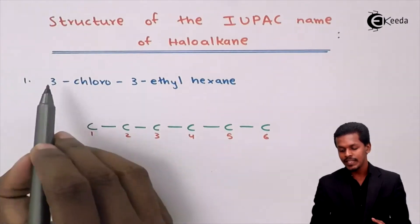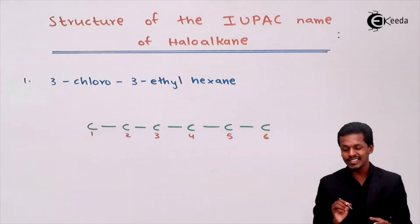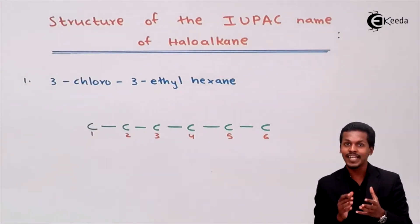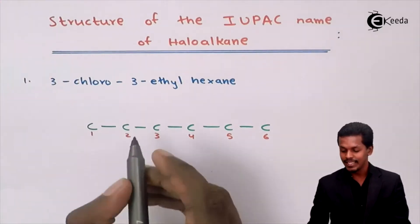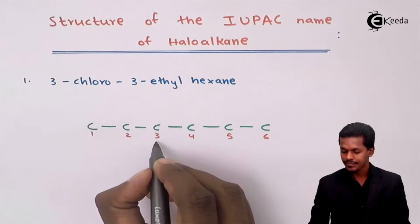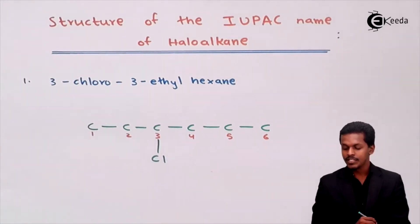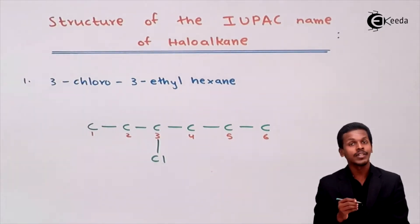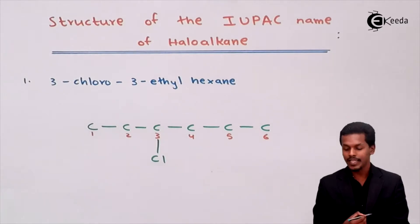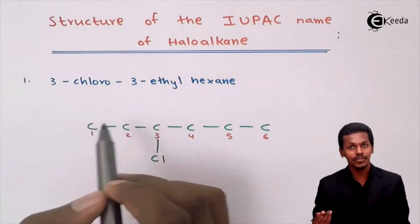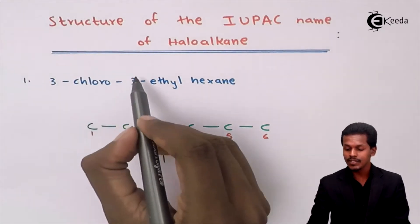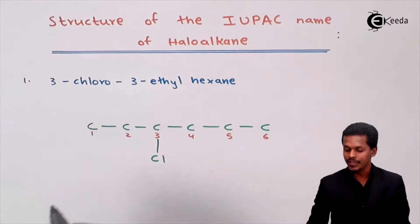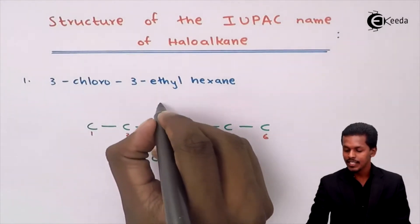It is mentioned as 3-chloro, which indicates the chlorine atom is attached to the third carbon atom. So we attach the chlorine at that position in the straight chain of hexane. The next substituent is ethyl, also attached to the third carbon atom, so we write C2H5 there.